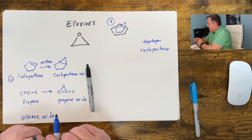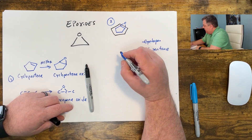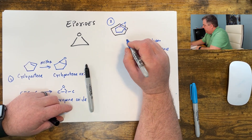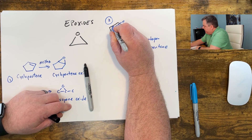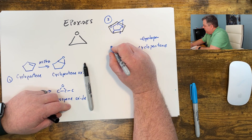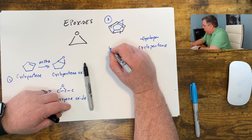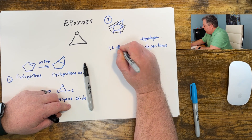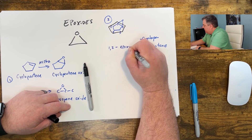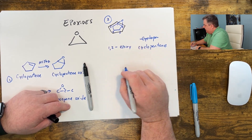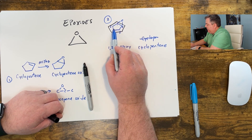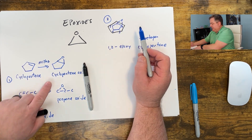Now we need to name the oxy part. If I number all my carbons, the epoxy group is on carbons one and two. So we could say 1,2-epoxy cyclopentane. 1,2-epoxycyclopentane is the same as this compound.